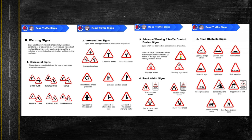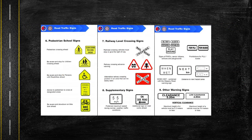Next would be the pedestrian school signs. We usually see these in school zones. First is pedestrian crossing ahead — be aware and stop for children crossing ahead, be aware and stop for persons with disability ahead, advise to pedestrian to cross at designated areas, and be aware and slow down on bike lane ahead. For pedestrian school signs, the color is yellow.